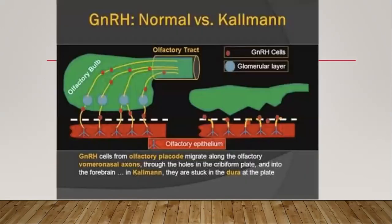In Kallmann syndrome, the GnRH-secreting neurons arise from the olfactory placode and are supposed to migrate to the area of the hypothalamus. If this migration does not occur properly, these cells do not reach their target, resulting in an impaired sense of smell and insufficient GnRH production, causing hypogonadism. This often manifests as delayed puberty, and the disorder is typically seen in males rather than females.